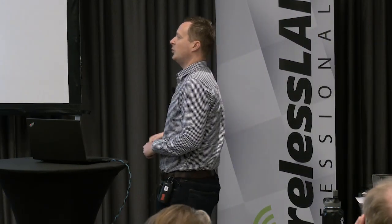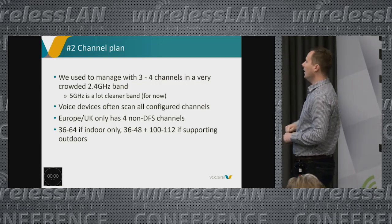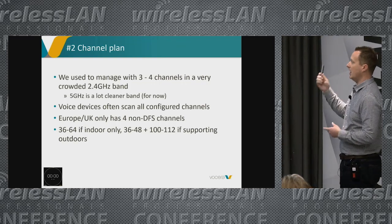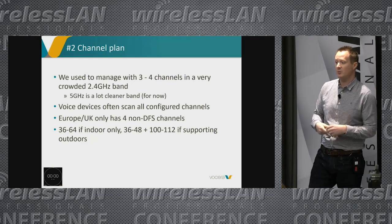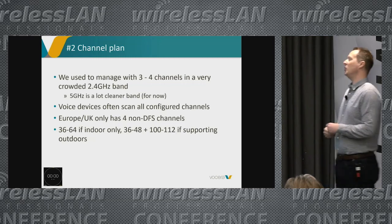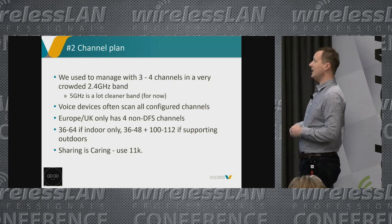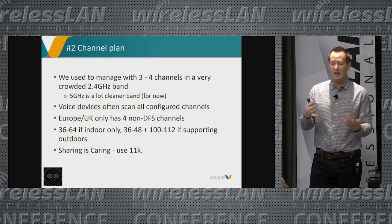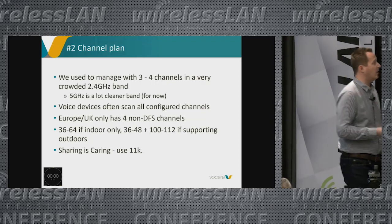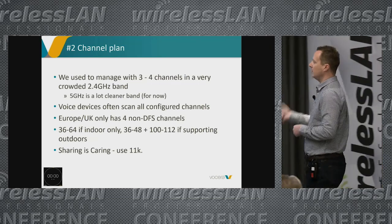My recommendation for indoor-only support is channels 36 to 64 — eight channels in a nice straight line, easy to roam through for non-DFS. For supporting transition between buildings, I recommend 100 to 112 for your four outside DFS channels, dropping the UNII-2 channels. And as I proved yesterday, 11k is great — turn that on. Voice wants as little roaming work as possible, so reducing the channel plan lets us focus on where we need to go.